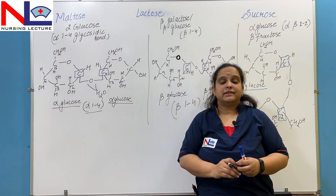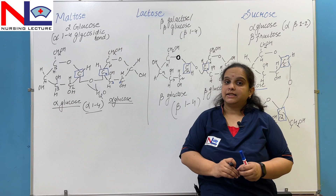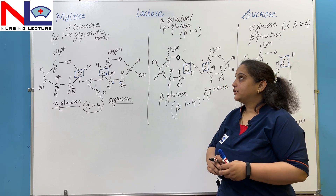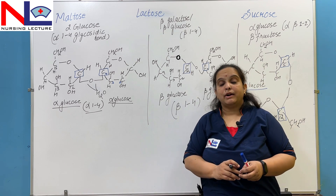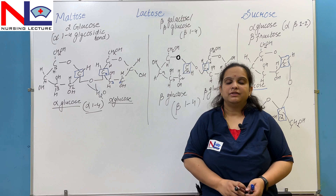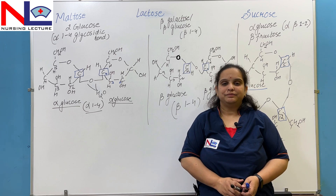So here we have seen the very important examples of disaccharides with their chemical structures — that is maltose, lactose, and sucrose. Thank you.